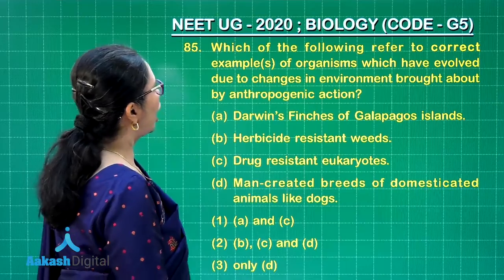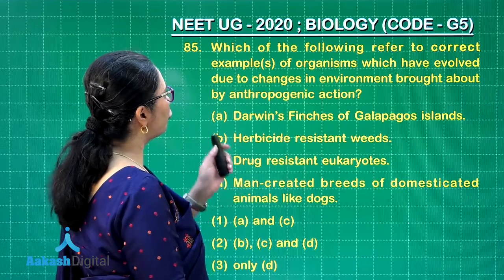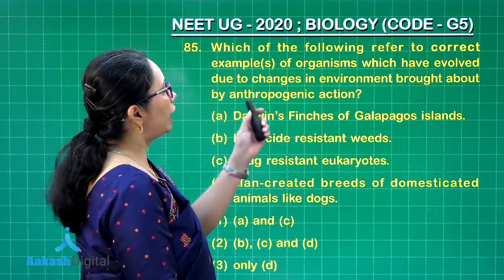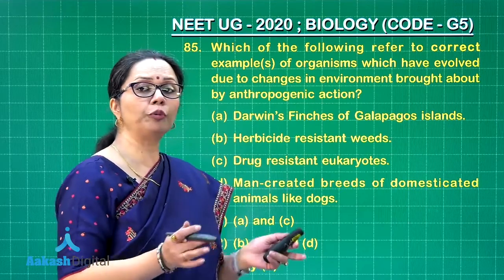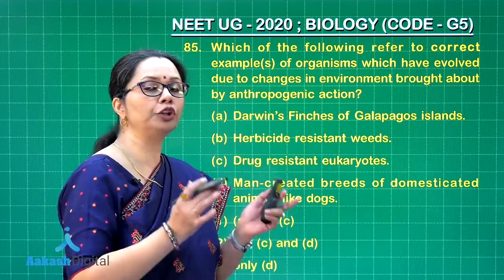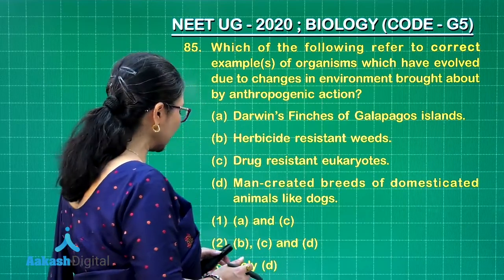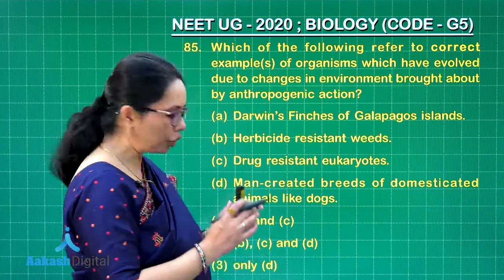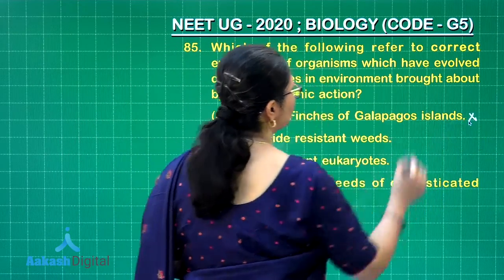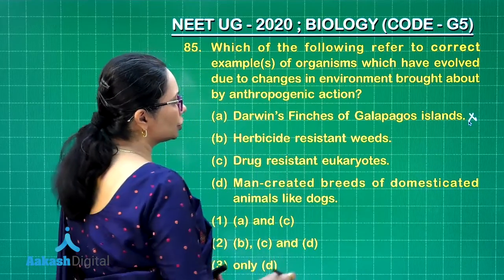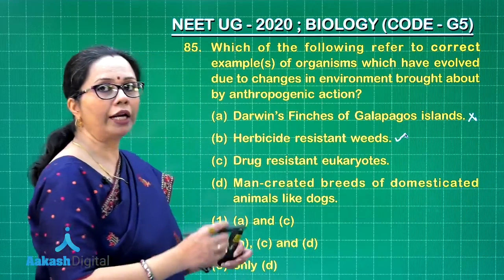Question 85: which of the following refer to correct examples of organisms which have evolved due to changes in environment brought about by anthropogenic action? Anthropogenic action would be action due to human activity. Darwin's finches of the Galapagos Islands — here humans had nothing to do, so this is absolutely not to be considered. Herbicide-resistant weeds — now this is right.